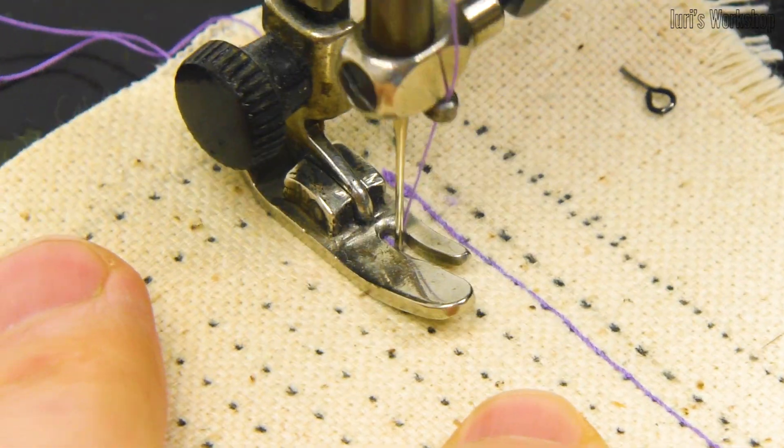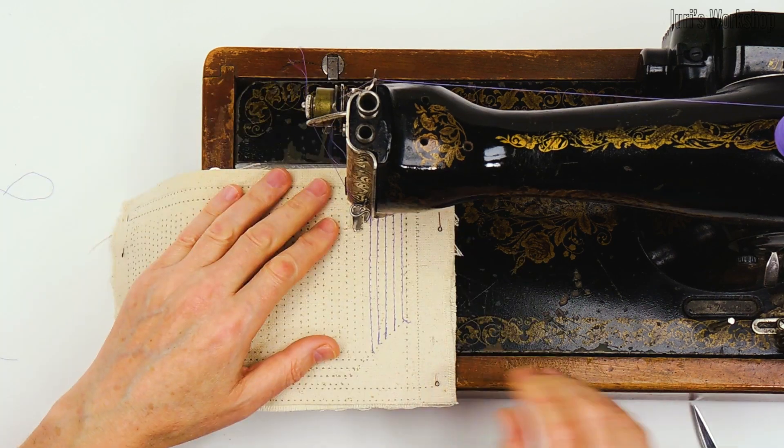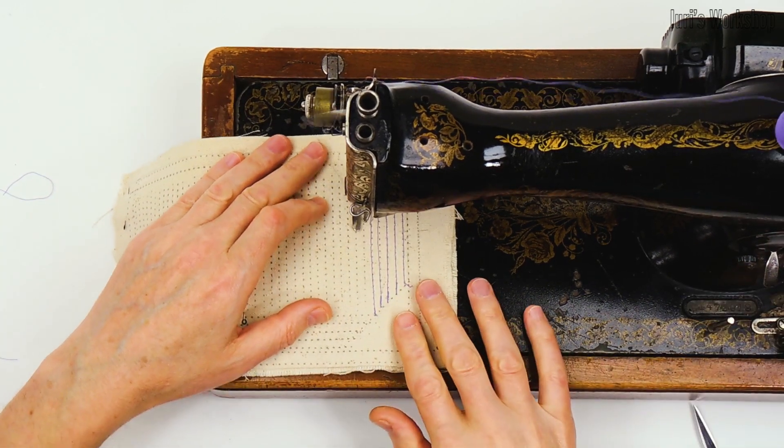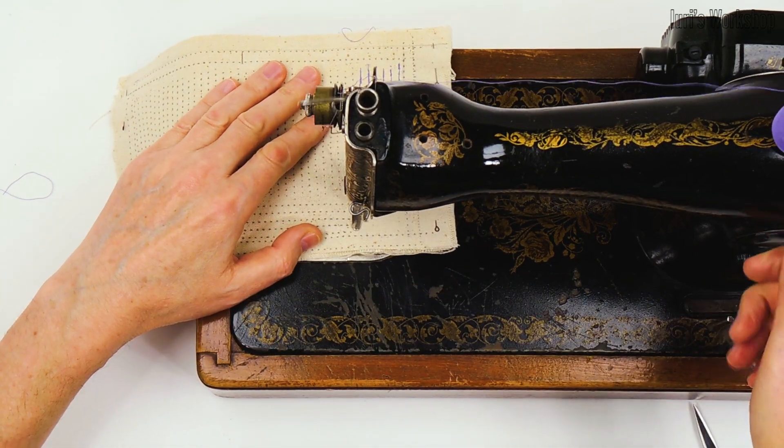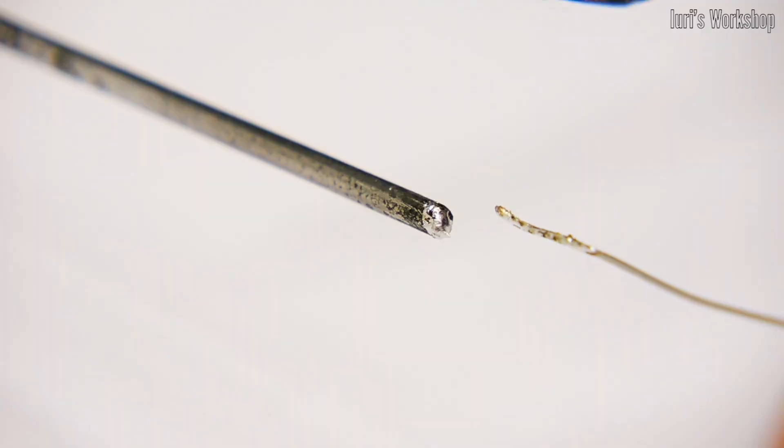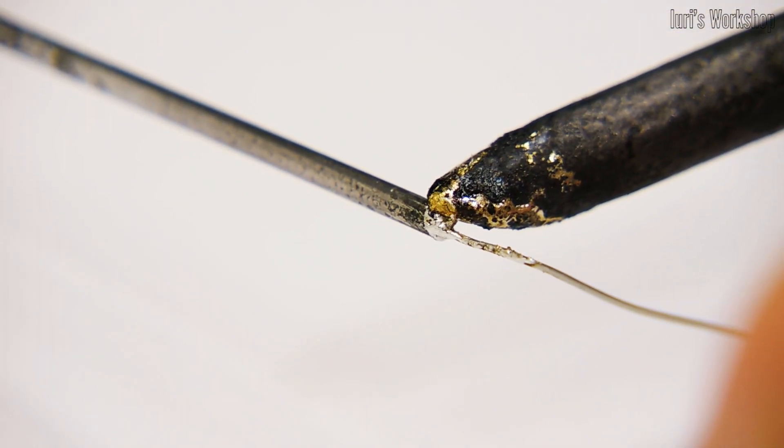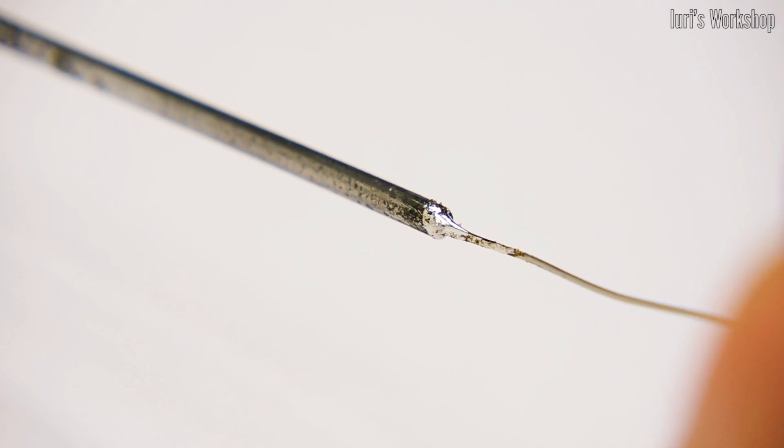First, I sewed the grooves for laying the nichrome wire. And then I inserted 4 wires with a diameter of 0.4 millimeters into these grooves using a homemade needle. You can make this needle from a bicycle knitting needle.